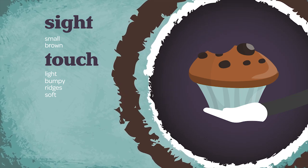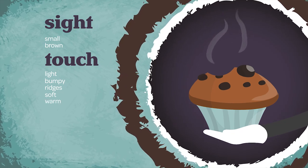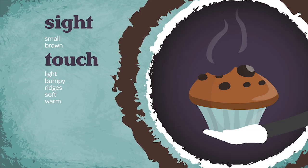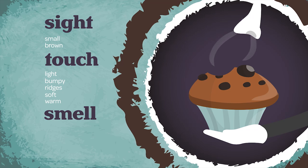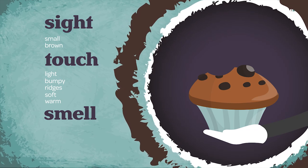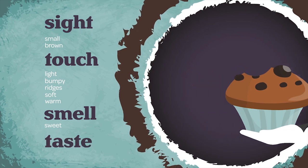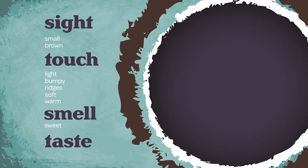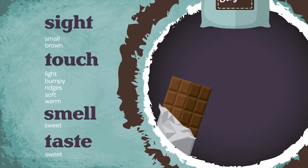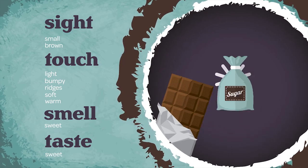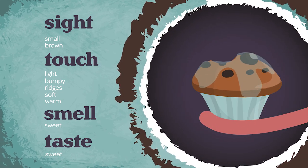If it were fresh from the oven, the object would also feel warm. You can use your sense of smell to observe objects as well. This object smells sweet. Your sense of taste will tell you that the object also tastes sweet, like chocolate and sugar. Your observations tell you that this object is a muffin.